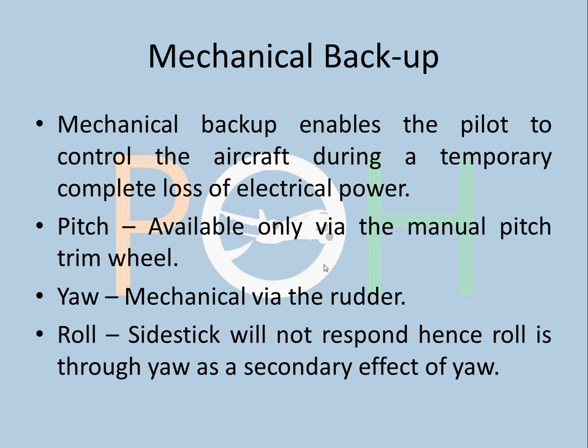Mechanical backup enables the pilot to control the aircraft during a temporary complete loss of electrical power. When electrical power is lost, the side stick will not be working. Pitch is available only via the manual pitch trim wheel on the center pedestal, and yaw is mechanical via the rudder — the THS and rudder are the only ones that are mechanically linked. Via the pitch trim wheel and the mechanical rudder you can control the aircraft to a good extent. For roll, since the side stick is not available, roll is used as a secondary effect of yaw.